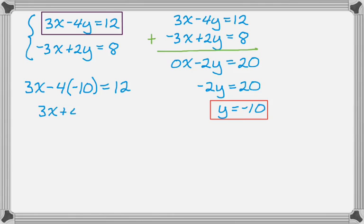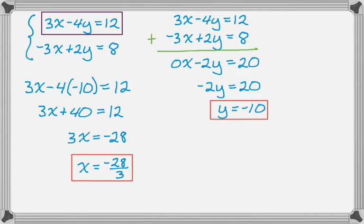That means 3x plus 40 equals 12. Subtracting, I get 3x equals negative 28. So x is negative 28 thirds.